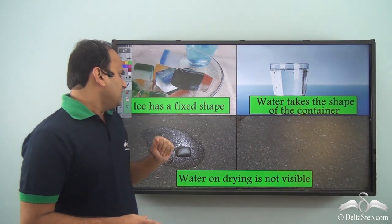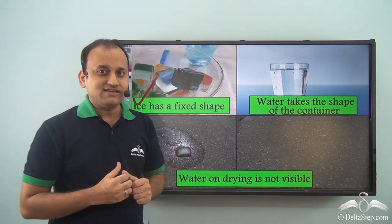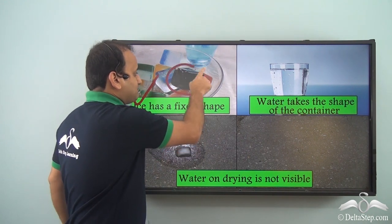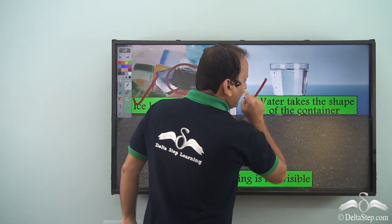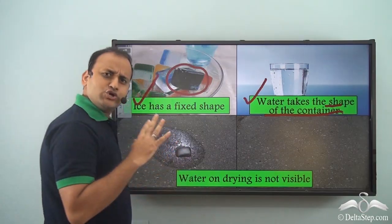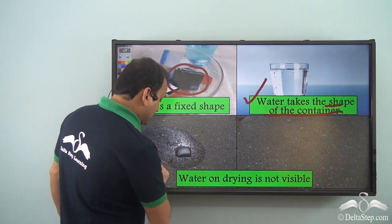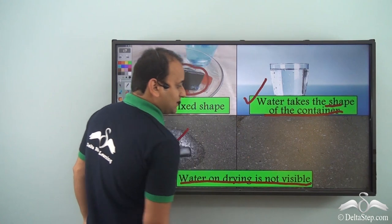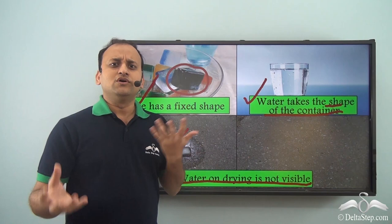Now here you see ice has a fixed shape. So initially you had ice which had a fixed shape — wherever you put it, it will hold its shape. As it converted to water, water takes the shape of the container, so it has no shape of its own. Now when water is kept under sunlight, it dries up and is not visible — it has converted into something that mixed with the air.